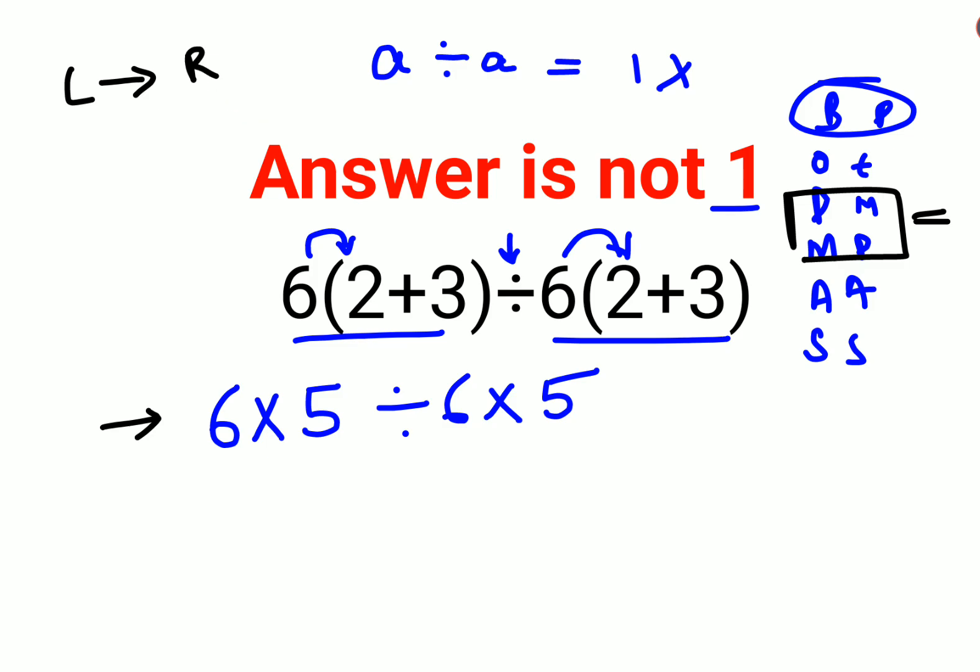30 divided by 6 gives you 5, times 5, so the answer comes out to be 25. I hope this is very clear to everyone.